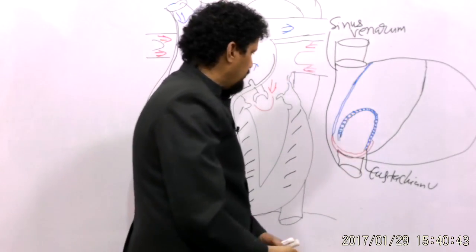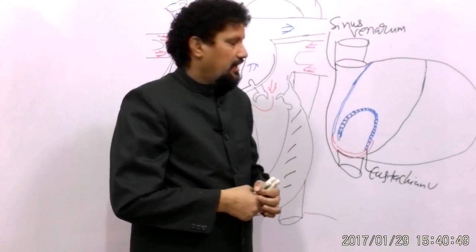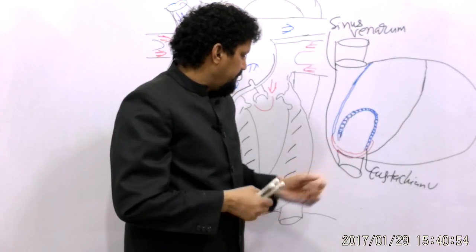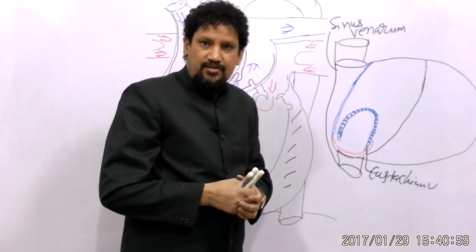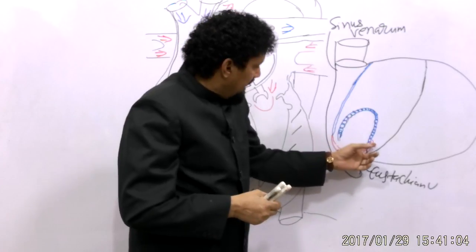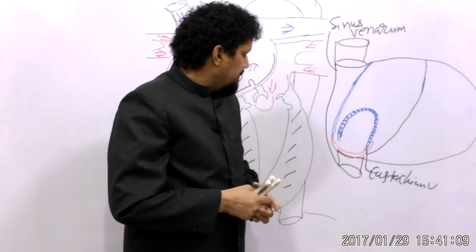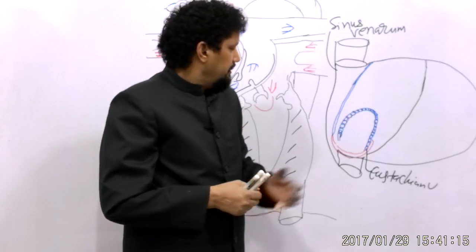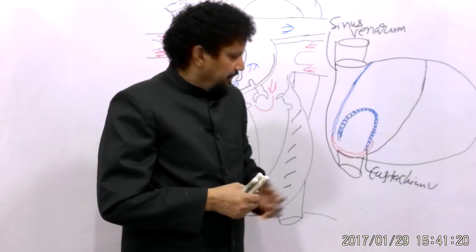The crista terminalis on the outer surface forms a sulcus or groove known as the sulcus terminalis, but internally it presents an elevation. The posterior right limb of this Eustachian wall remains continuous with the inferior edge of the crista terminalis. The left edge of this Eustachian wall remains continuous with the anterior horn of the limbus fossa ovalis.